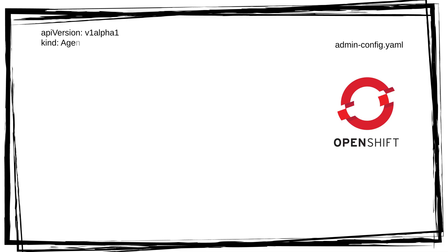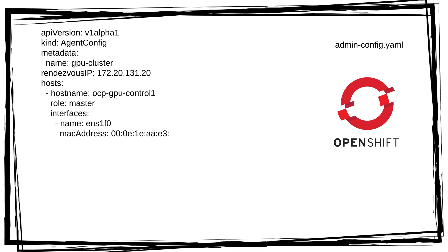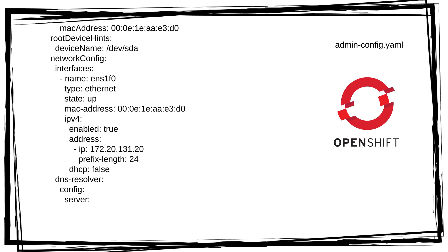We're ready to move on to the second config file: agent config. In here, we need to reference our cluster name and specify the rendezvous IP, which should match the IP of one of the controllers. The host section is where we can granularly define our OpenShift nodes, including network interfaces and MAC address, the disk we want to boot from, and custom IP configuration. Repeat for remaining controllers and workers.